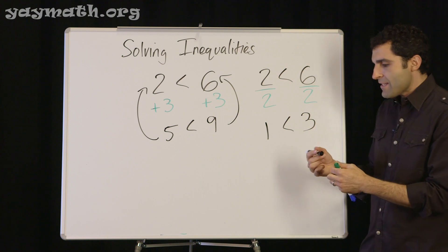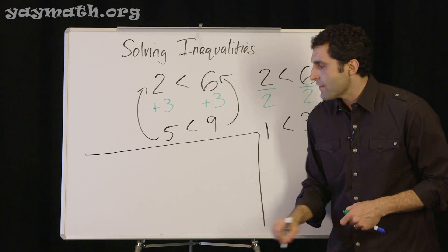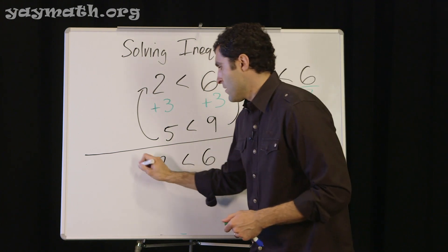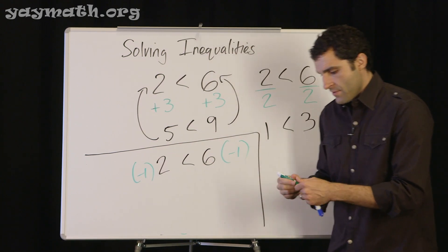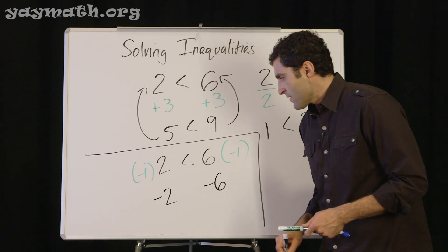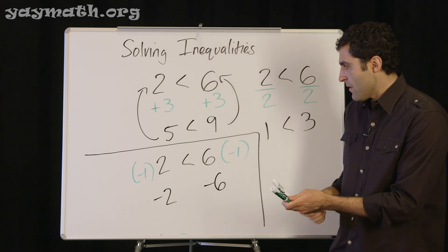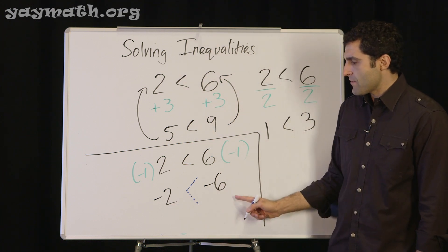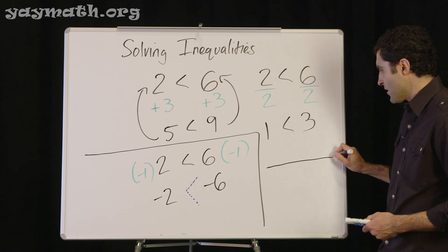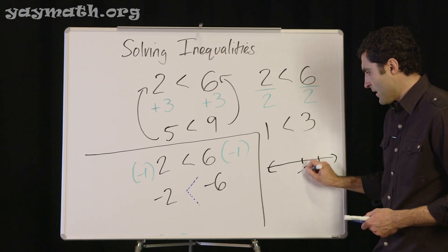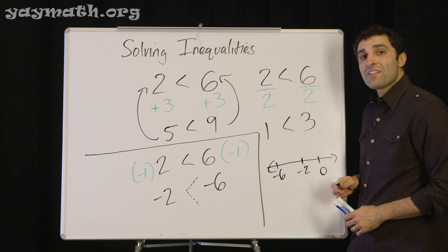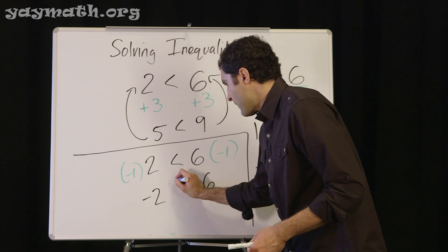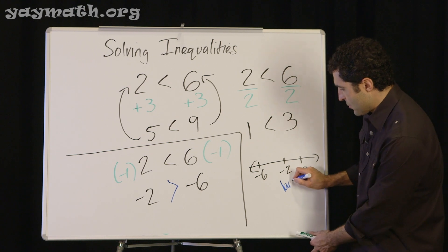I'm going to show you the exception over here in the box. Let's take two less than six and multiply both sides by negative one. We get negative two and negative six. Is negative two less than negative six? On the number line, less than means to the left. Here's zero, here's negative two, here's negative six — which one's smaller, which one's to the left? Indeed it's negative six.